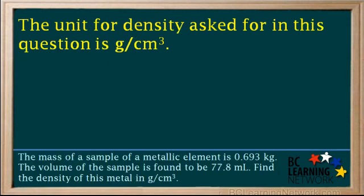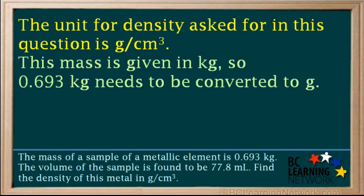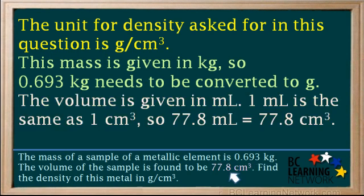The unit for density asked for in this question is grams per centimeter cubed. Because the unit wanted contains grams, and the mass is given in kilograms, the 0.693 kilograms needs to be converted to grams. The volume is given in milliliters; however, it is known that 1 milliliter is identical to 1 centimeter cubed. So the given volume, 77.8 milliliters, is equal to 77.8 centimeters cubed.